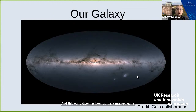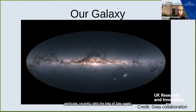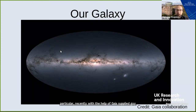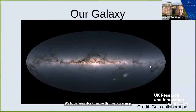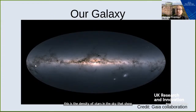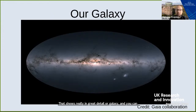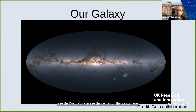Our galaxy has been mapped quite extensively over the last 10 to 20 years. In particular, recently with the help of the Gaia satellite — the Gaia mission — we have been able to make this particular map shown here. This is the density of stars in the sky that shows in great detail our galaxy. You can nicely see not only the disk of the galaxy, but also the dust and the center of the galaxy.